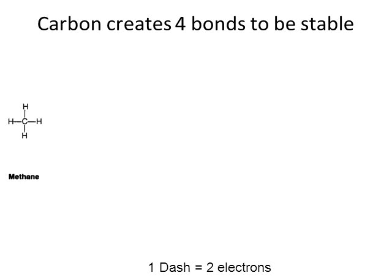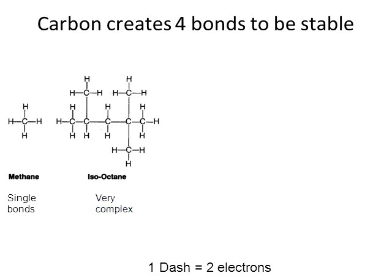Here's methane again. All the single dashes are examples of single bonds. Focusing on the carbon in the middle, you can see four dashes attached — one dash is two electrons, so four dashes is eight electrons, and this carbon is stable. In a more complex example, isooctane, if we pick any carbon, we see four dashes coming off of it for a total of eight electrons. It's stable, as are all the other carbons.